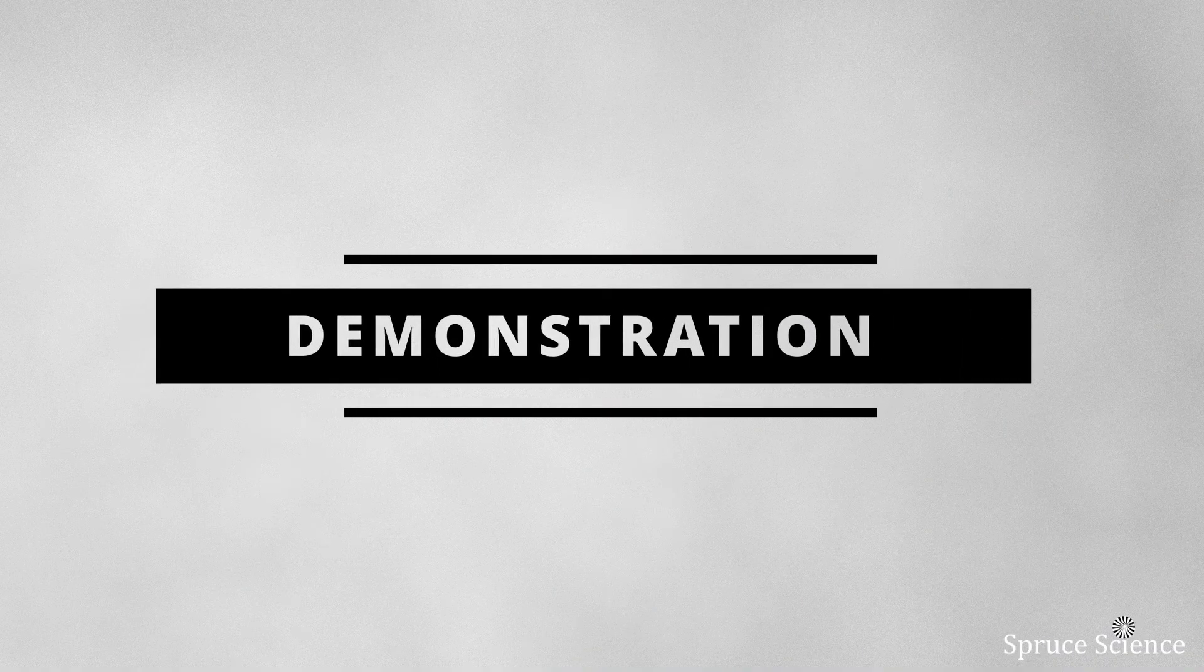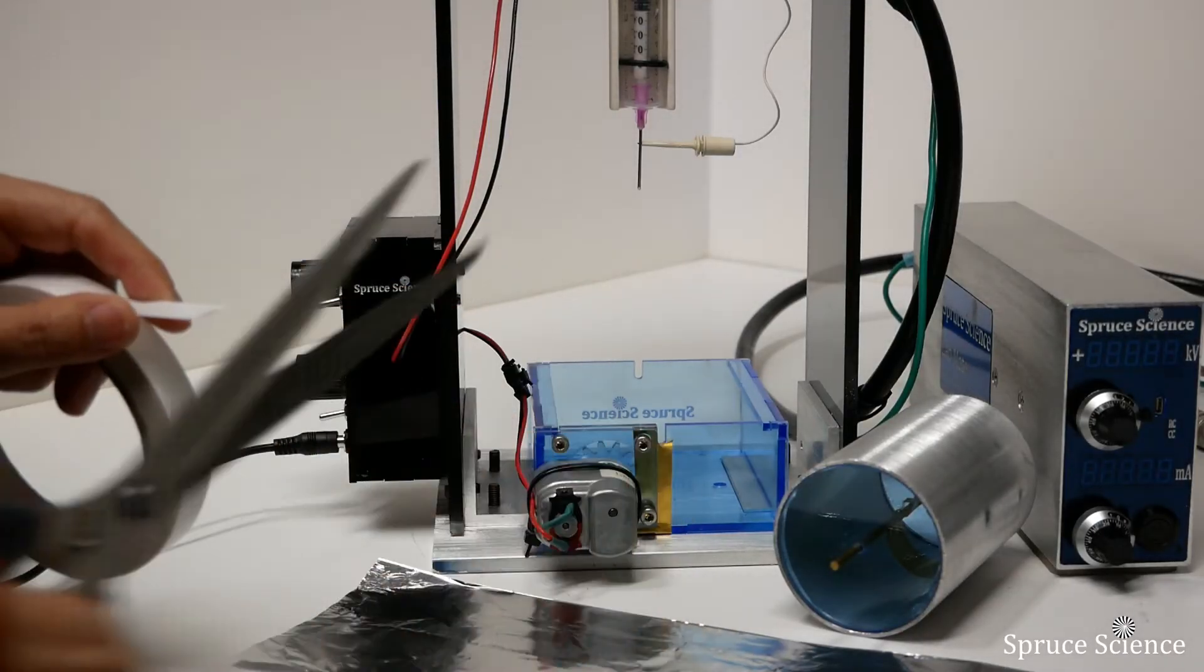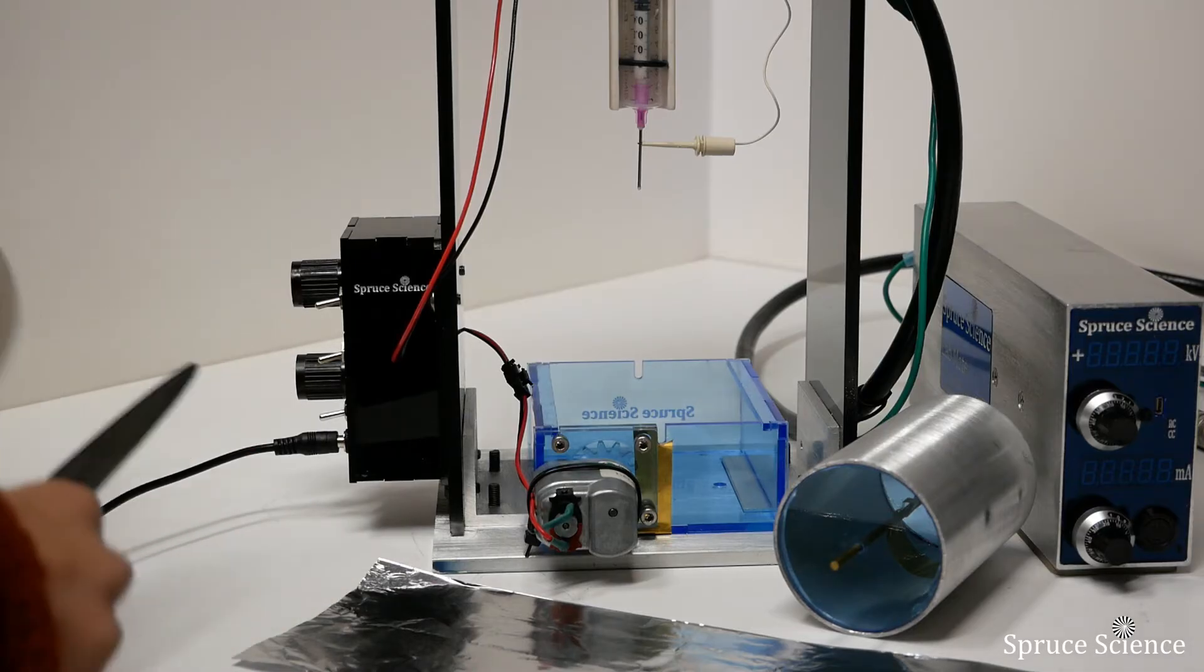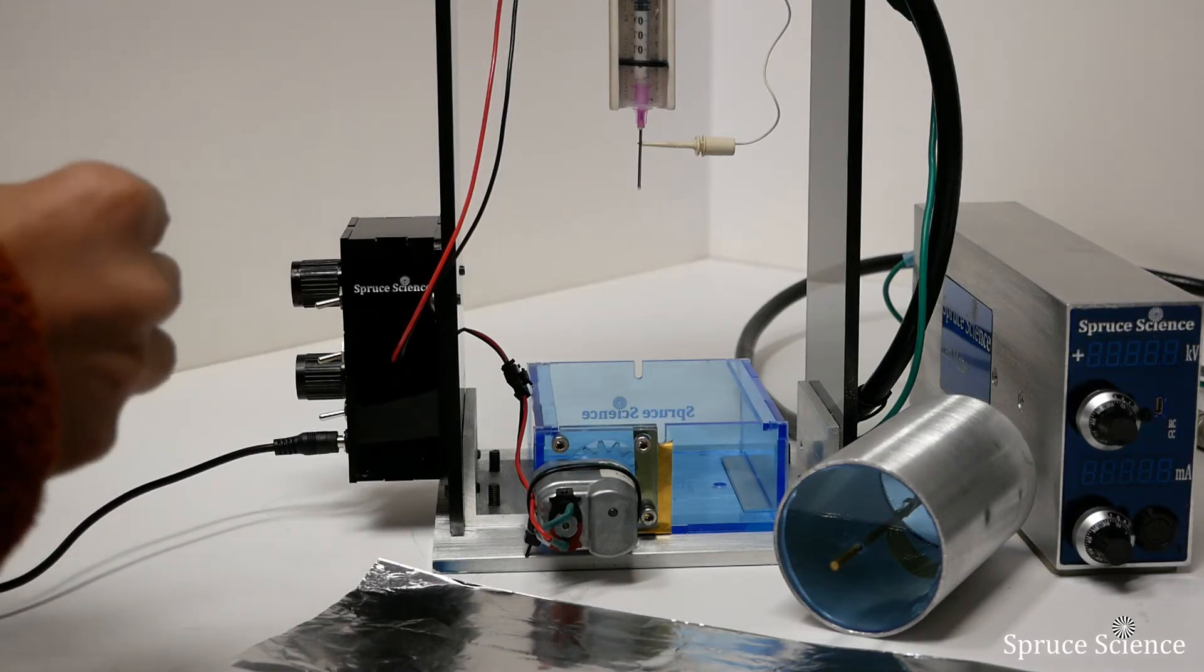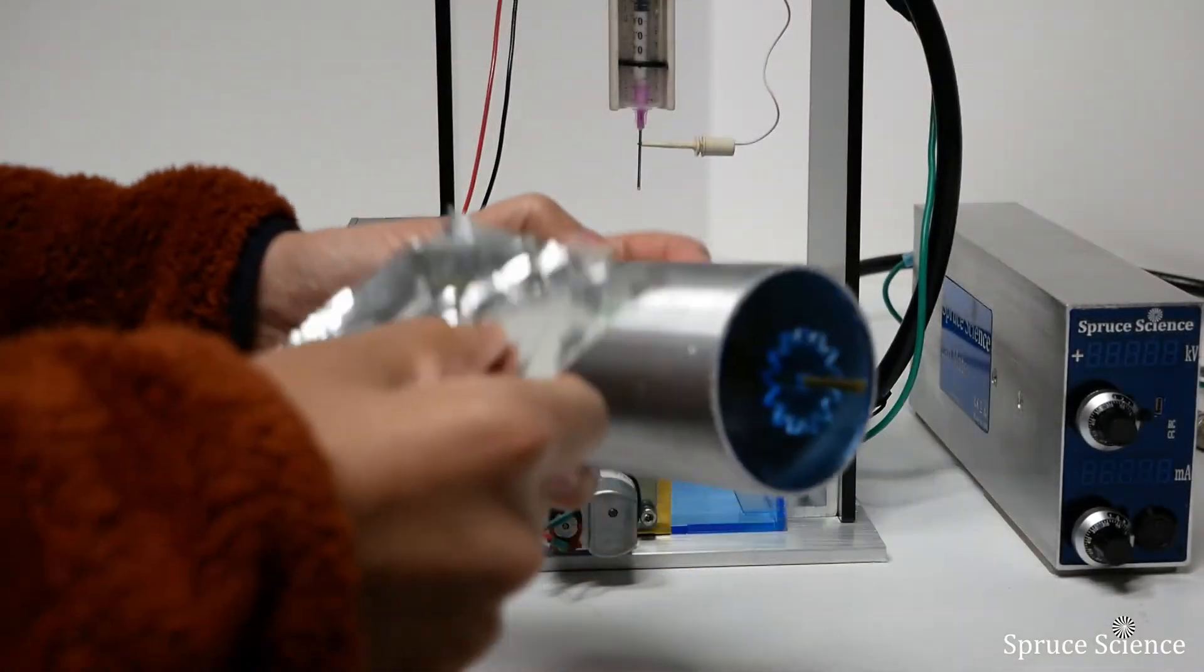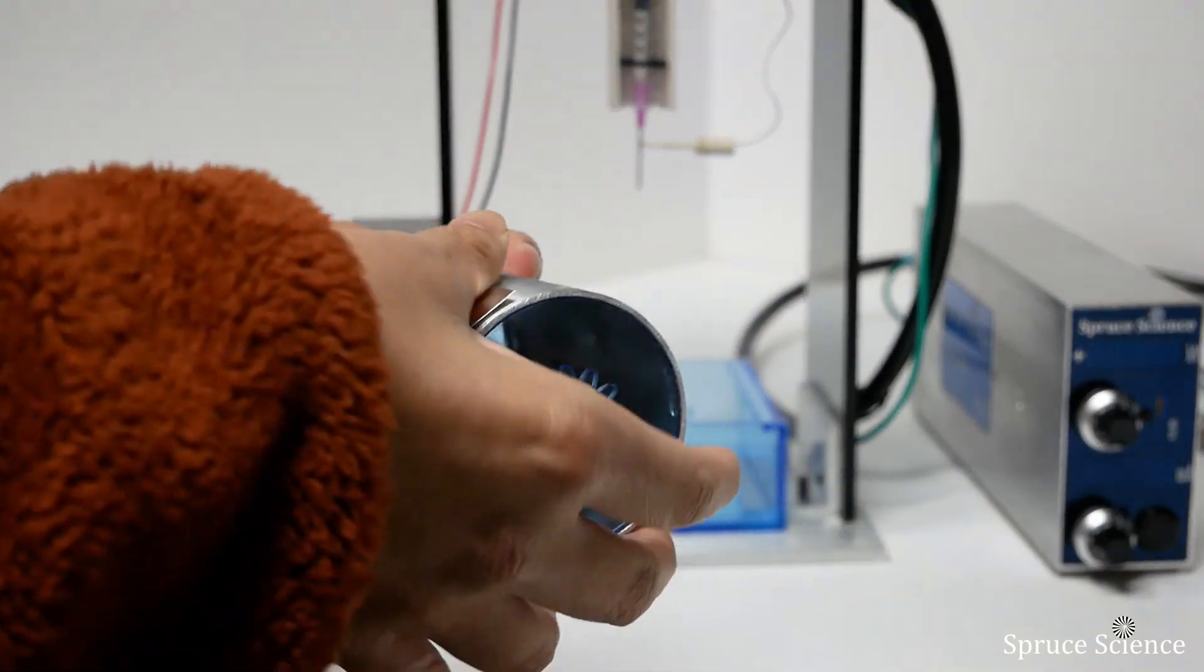The electrospinning machine is ready for demonstration. Depositing the electrospun fibers on an aluminum foil works well because it is easier to gather samples with different parameters that you can go back to analyze later. You can see here that we're using double-sided tape to hold the aluminum foil in place.